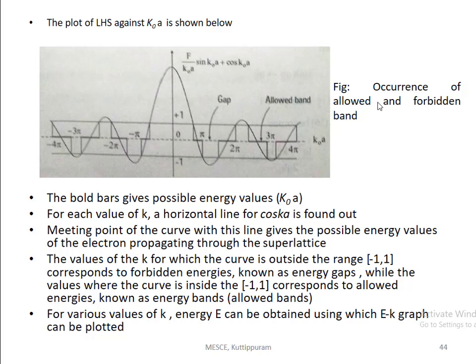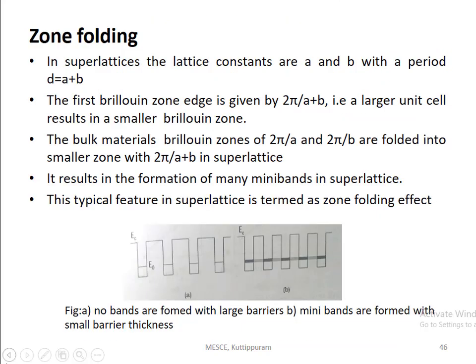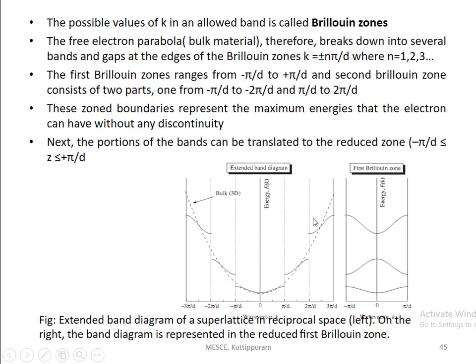Now we will try to calculate and plot the energy graph. In that graph, for a particular band, the different k values form Brillouin zones. The possible values of k in an allowed band are called Brillouin zones. If you take a bulk material, the energy versus wave vector plot will be a continuous parabolic function. But in a superlattice, that continuous parabola is broken down into several bands, and between the bands there is a certain gap.